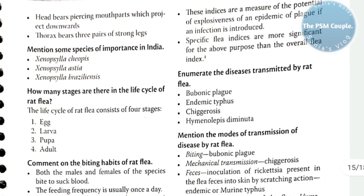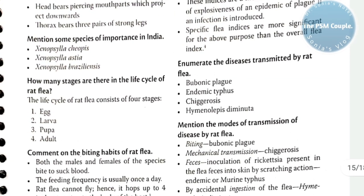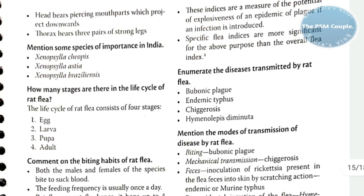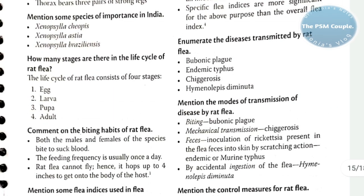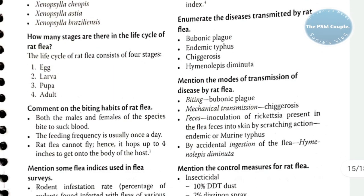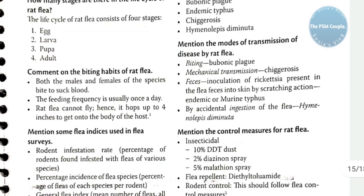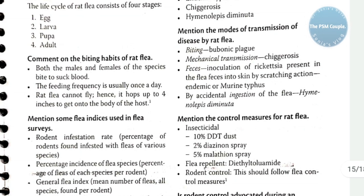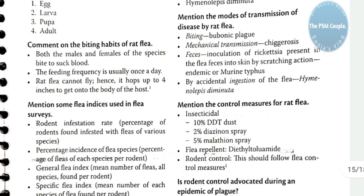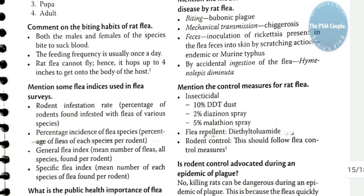Species of importance in India are Xenopsylla cheopis, X. astia, and X. braziliensis. There are four stages in the life cycle of the rat flea: egg, larva, pupa, and adult. Regarding biting habits, both males and females bite to suck blood; feeding frequency is usually once a day. The rat flea cannot fly — it hops up to four inches to reach the host.